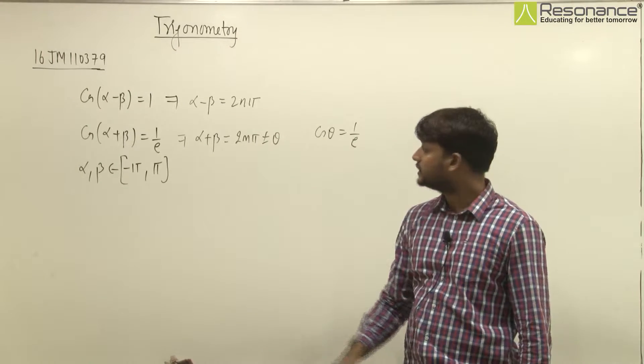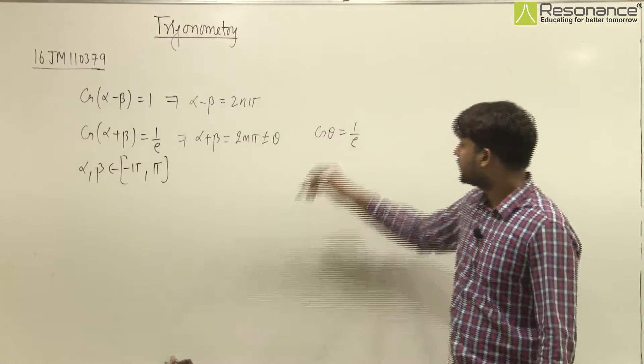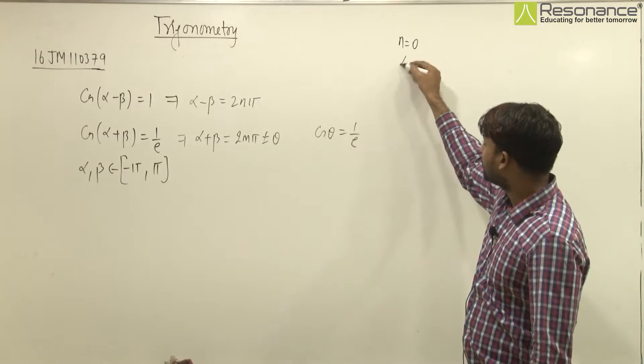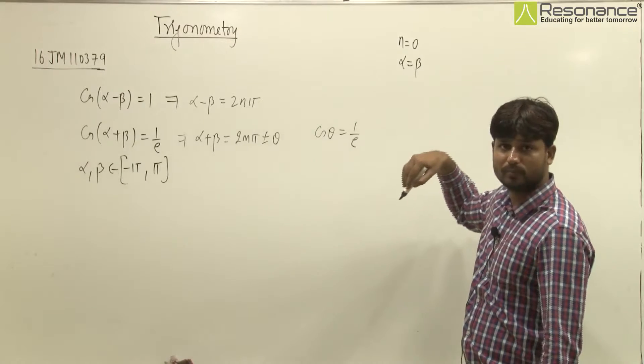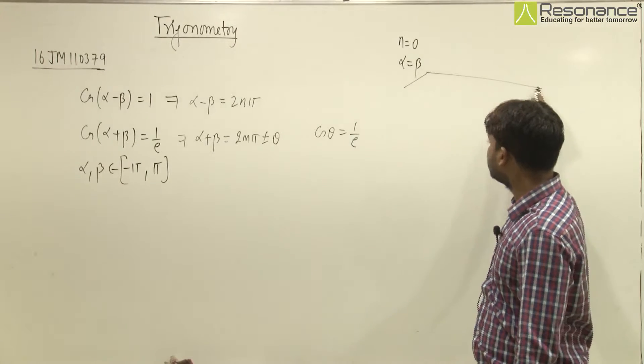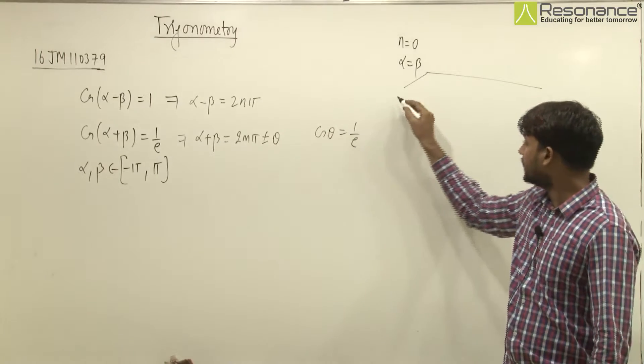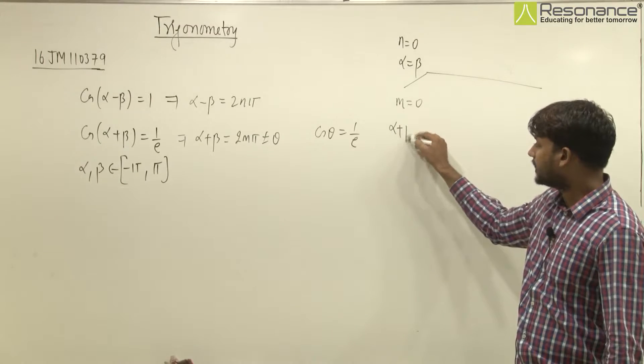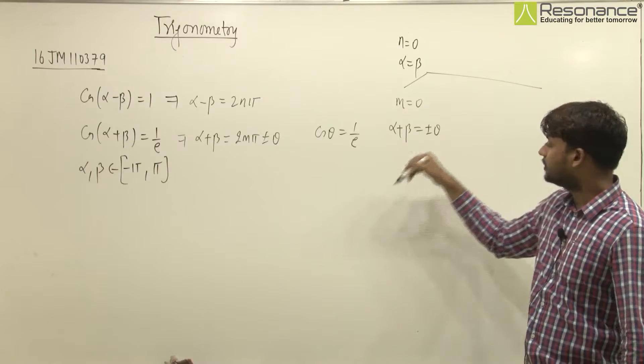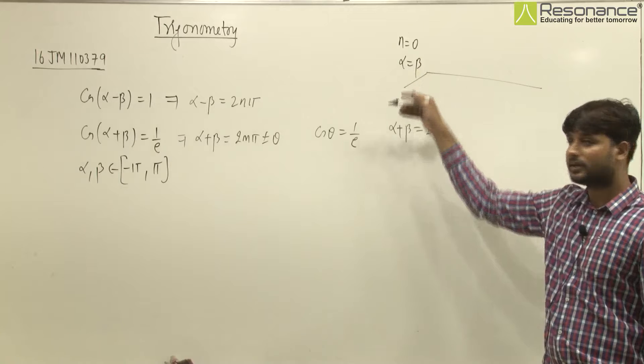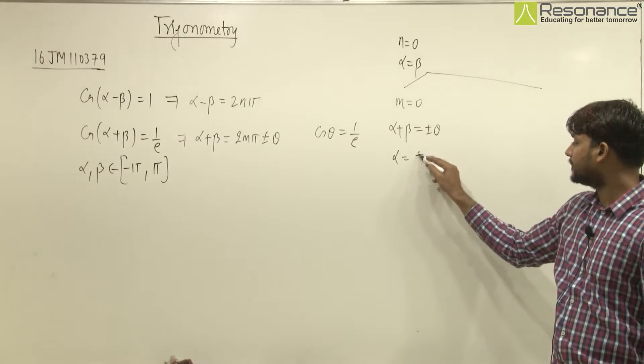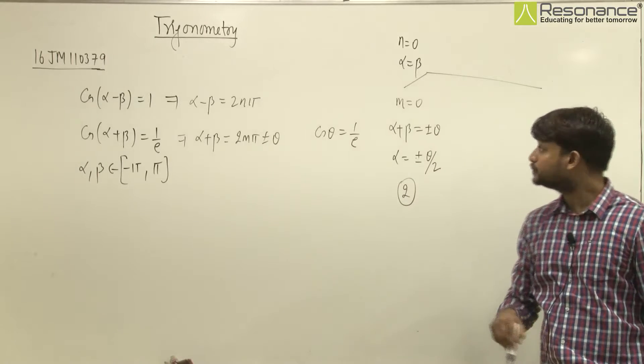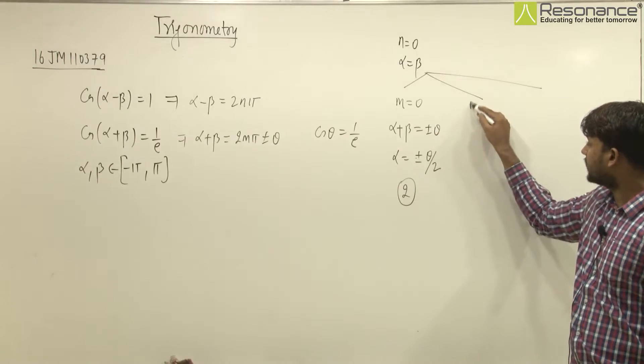Now we take some values for n and m. Let's say n's first value we take as zero, so we get alpha equal to beta. Now we change m's values. First m's value we take as zero, so alpha plus beta equals plus minus theta. Since alpha is equal to beta, alpha equals plus minus theta by 2. So we get 2 ordered pairs.